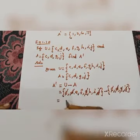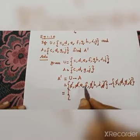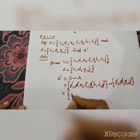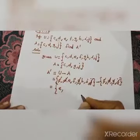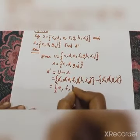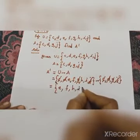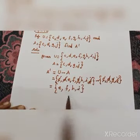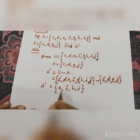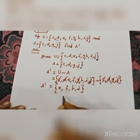The remaining elements in U are E, F, H, I. Therefore A dash is equal to {E, F, H, I}.